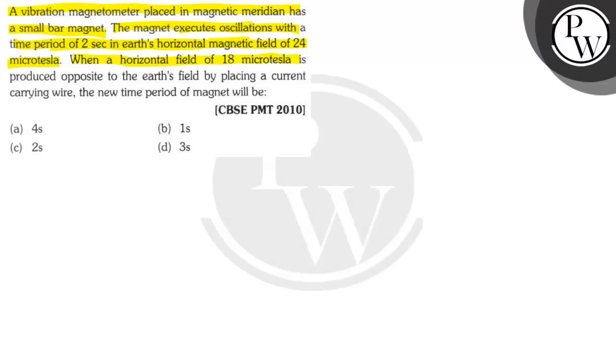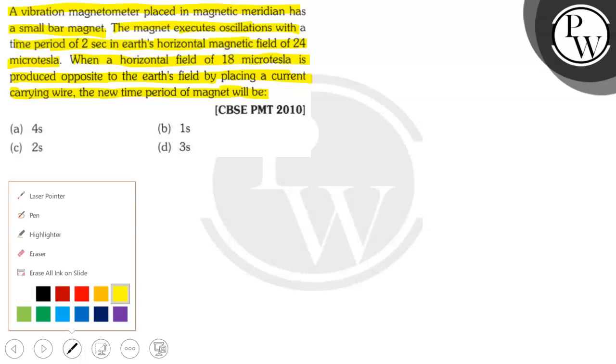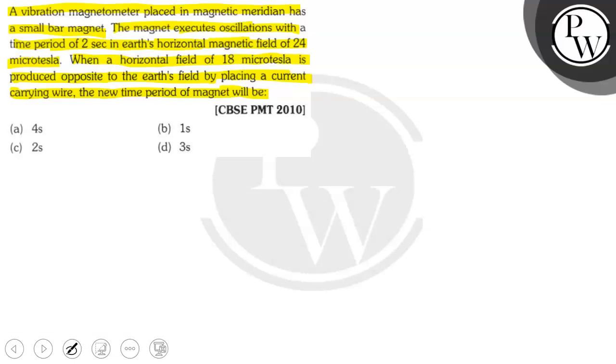When a horizontal field of 18 microtesla is produced opposite to the earth's field by placing a current carrying wire, the new time period of magnet will be? So we have given that a magnetometer is placed in a magnetic meridian and it has a small bar magnet. The time period of bar magnet in earth's magnetic field of 24 microtesla is given as 2 seconds.